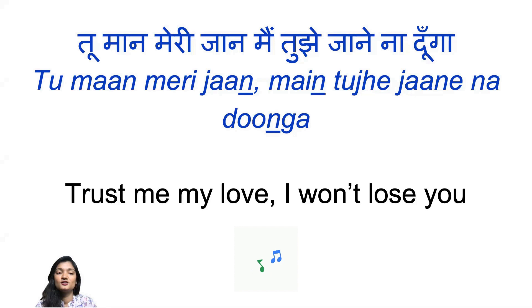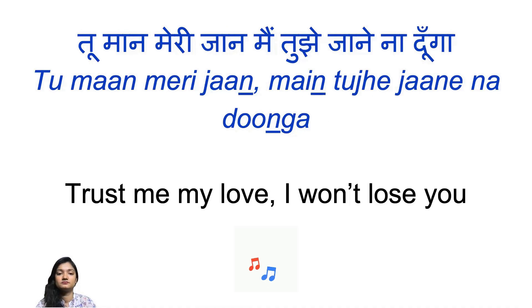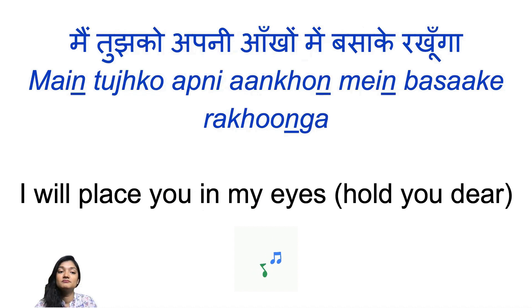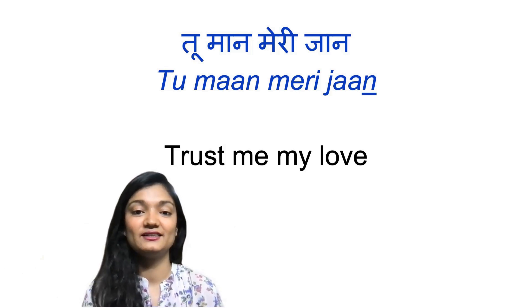Let's go over the chorus part once again. Tu maan meri jaan — trust me, believe me, my love. Main tujhe jaane na dun ga — I won't let you go. Main tujhko apni baho mein chupa ke rakhun ga — I, in my arms, will keep you hidden and protected. Tu maan meri jaan, main tujhe jaane na dun ga. The same line where he is expressing his love. Main tujhko apni aankho mein basa ke rakhun ga — I, in my eyes, will place you forever, will hold you dear forever. Tu maan meri jaan — trust me, my love. And this is where the song ends.